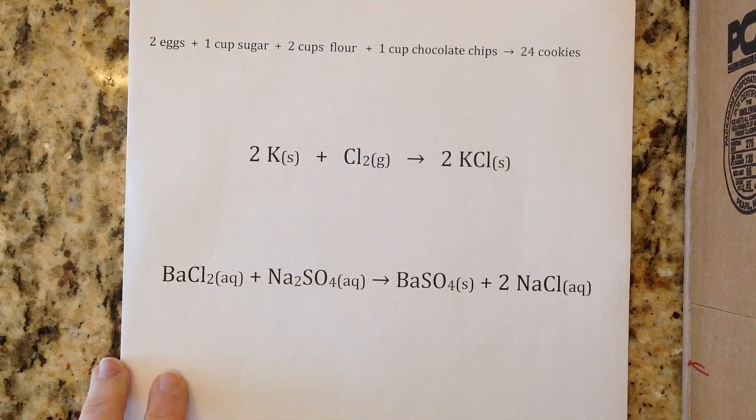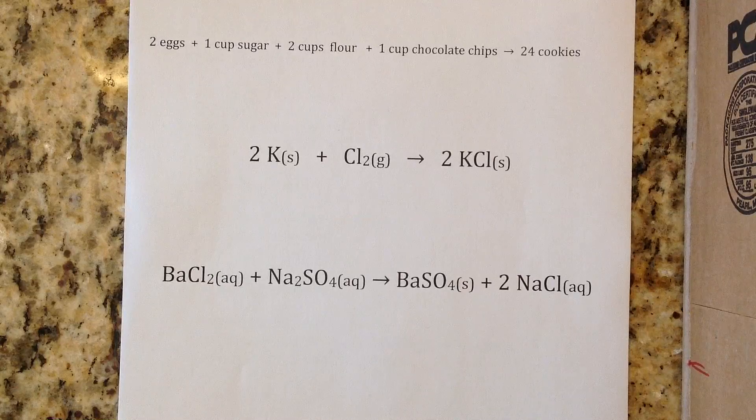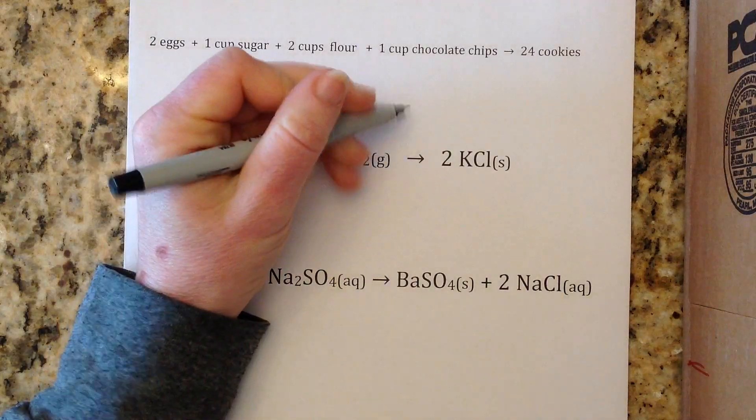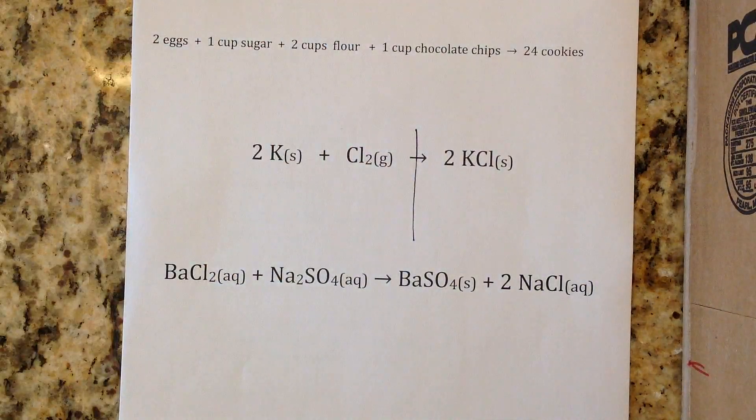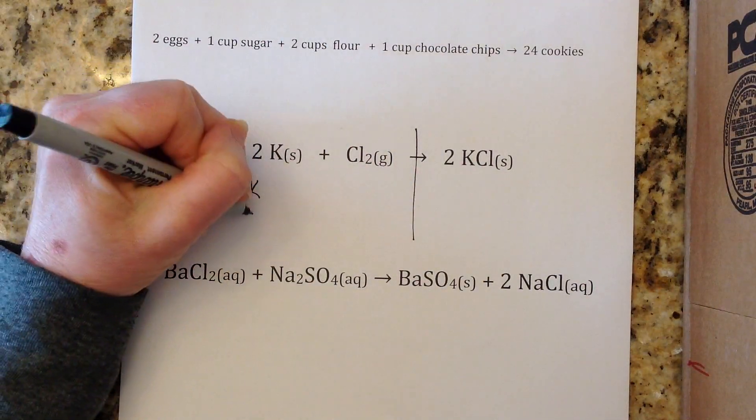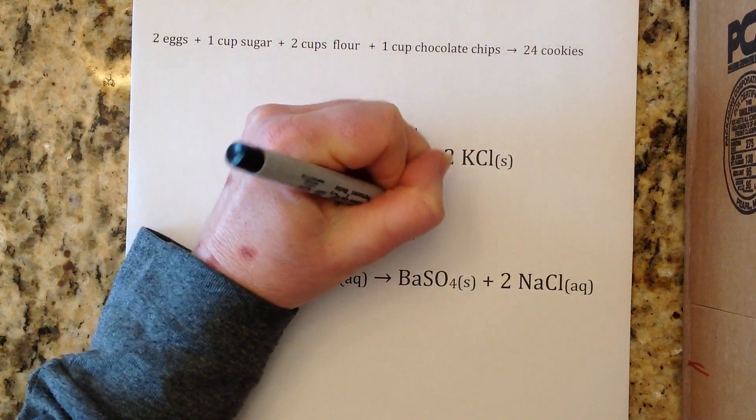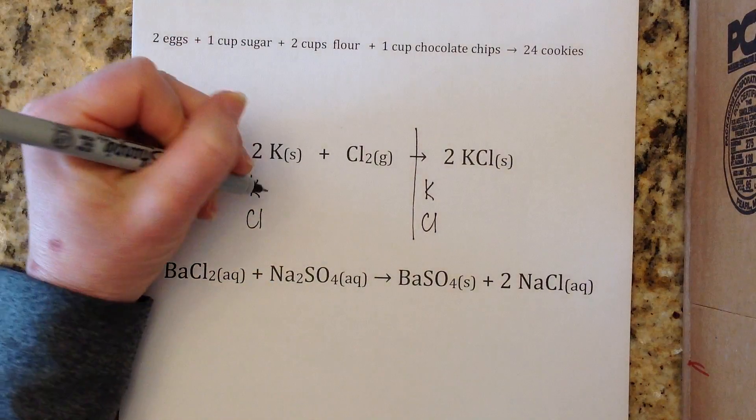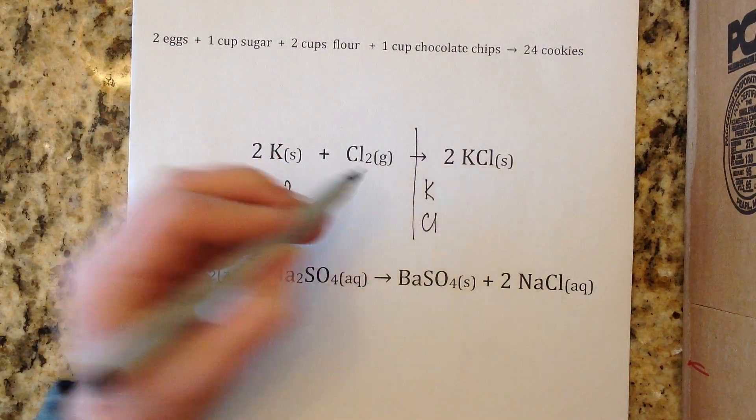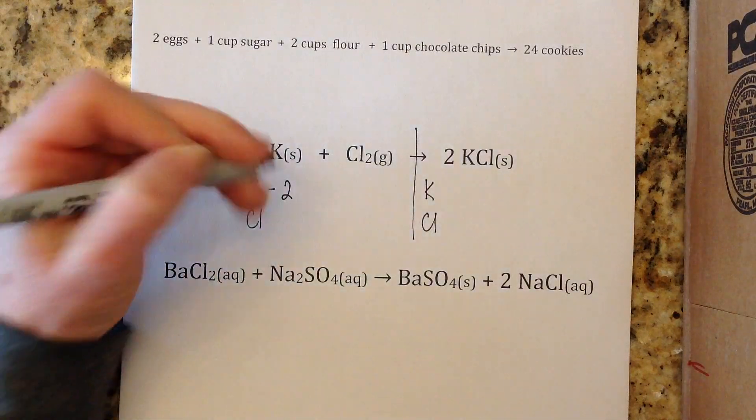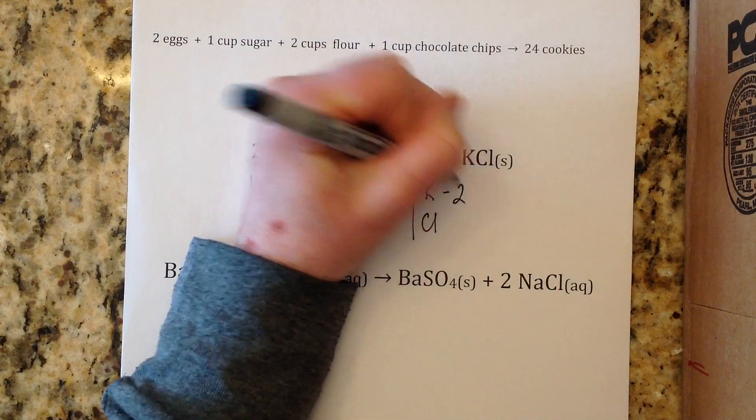We divide the reaction in half right here in the middle. You can see that we're obeying the law of conservation of mass - we have the same number of atoms on each side. For example: 2 times 1 is 2 potassiums, 1 times 2 is 2 chlorines on the left; 2 times 1 is 2 potassiums, 2 times 1 is 2 chlorines on the right.